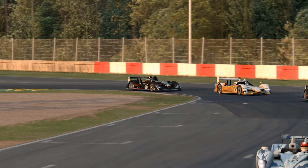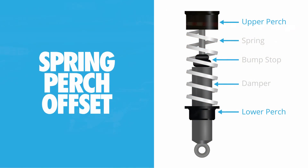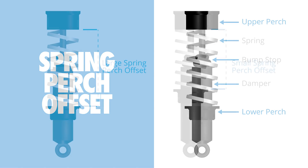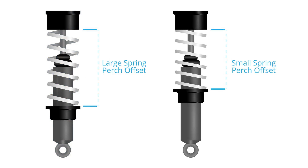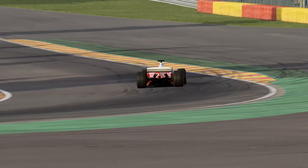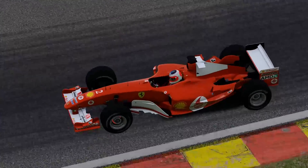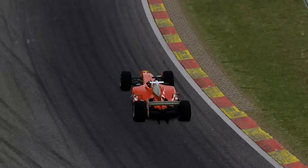From a terminology perspective, depending on the sim you're using, you may find that the ride height adjustment is covered by a setting called spring perch adjustment or spring perch offset. As you can see from the diagram, the spring perches limit how far the spring can extend, and therefore control the ride height of the car. Finally, in single-seater cars, pushrod suspension is fairly common, so in some sims you may be able to alter the pushrod length to change the ride height.